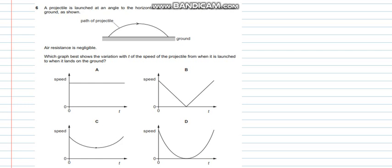Question 6 says a projectile is launched at an angle to the horizontal at time t equals 0. It travels over horizontal ground as shown. Air resistance is negligible. Which graph shows the variation of the speed of the projectile from when it is launched to when it lands on the ground. So we must realize that the horizontal component remains the same. Velocity of the horizontal component always remains the same at highest point and at landing. The horizontal velocity remains the same.